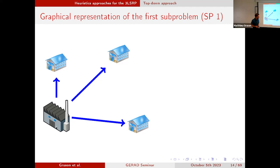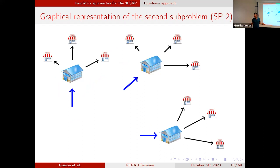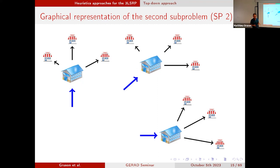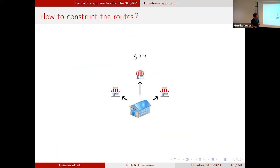The second sub-problem is the rest of the supply chain — we decide on the flow of goods between the warehouse and the different retailers. What we know from the first part is how much is available at each warehouse in each time period. In this sequence of sub-problems, we consider direct shipments to make the problem a bit easier, but we will be able to build routes from the solution.